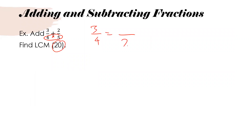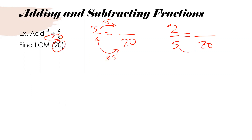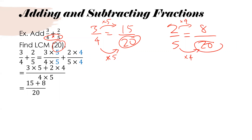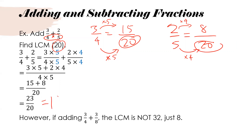I take 3 over 4 and try to rewrite it with a denominator of 20. The lowest common multiple is 20. What do I multiply 4 by to get to 20? I multiply by 5, so I do the same to the numerator and multiply by 5. For the other fraction, I multiply the denominator by 4 to get to 20, and do the same to the numerator, giving me 8. Three times five gives me 15. Once I have equivalent fractions with the same denominator, I can add: 15 plus 8 gives me 23 over 20, which I can reduce to one and three twentieths.